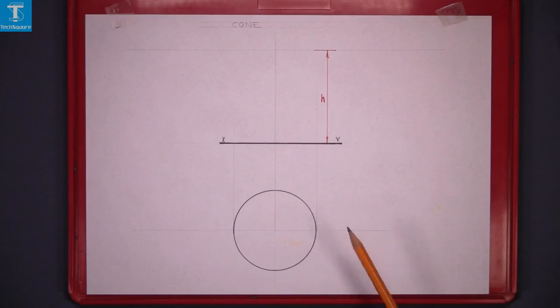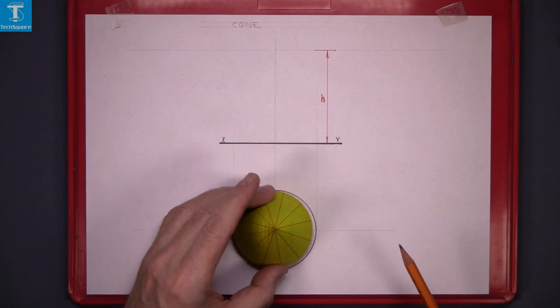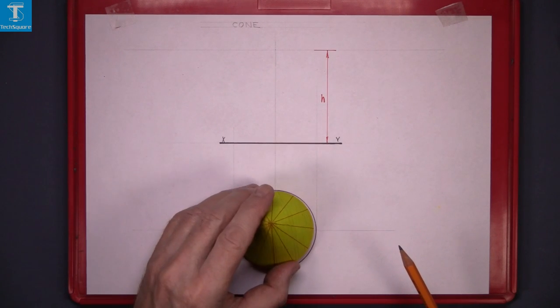Now this represents the plan of a cone. So that's the cone looking directly down on top of it.